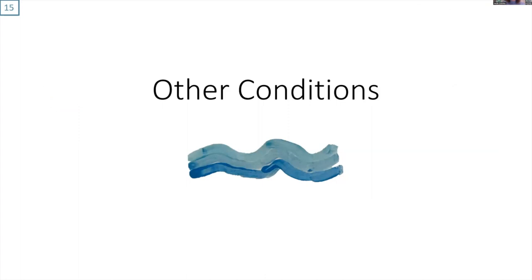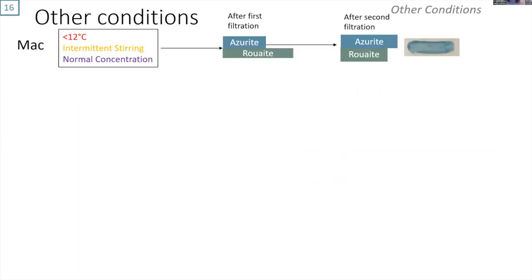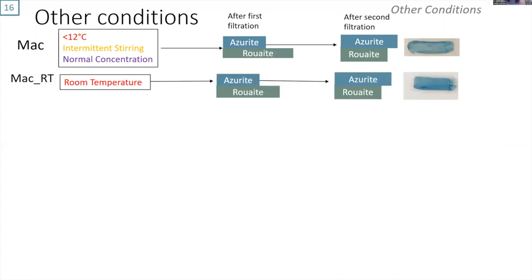We tried to alter the reaction conditions to see how this changed the product formed. Under cold conditions with intermittent stirring and normal concentration, we made azurite and ruite. We increased the temperature to 18-19 degrees, room temperature in the lab. This gave the exact same results.